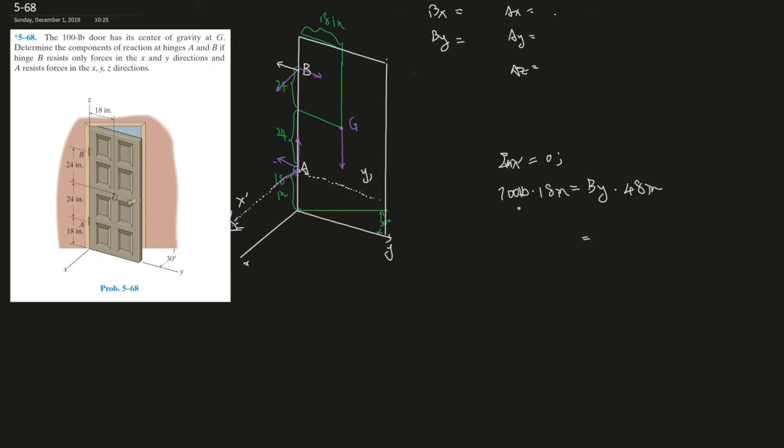18 times 100, that's 1800, that's 18000 inch-pounds, and By times 48 inches. You divide it, the inches cancel out, and By should give you 37.5 pounds.